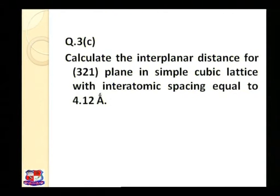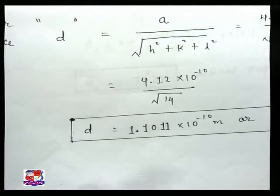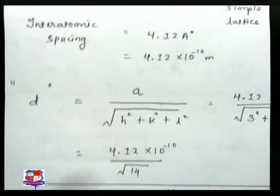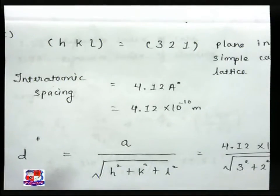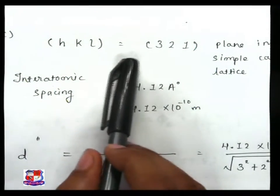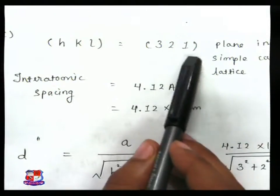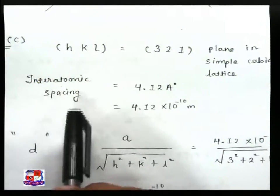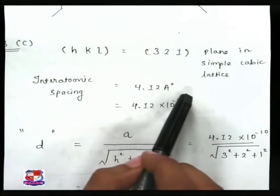Here, hkl is equal to 3, 2, 1. Here you can see that hkl represents the Miller indices 3, 2, 1, where the interatomic spacing is 4.12 angstrom.